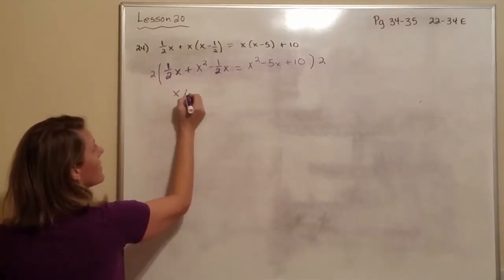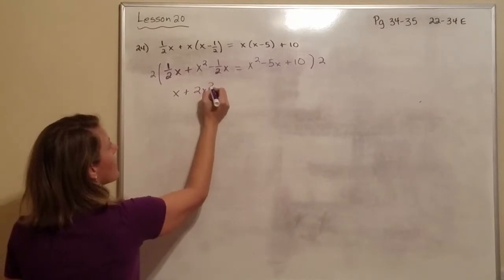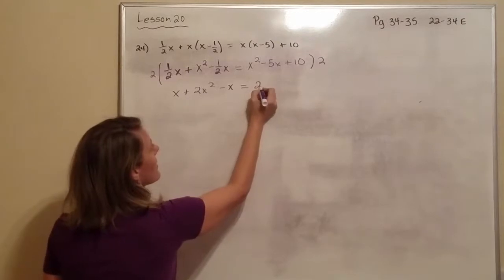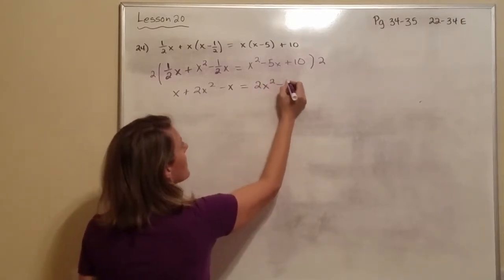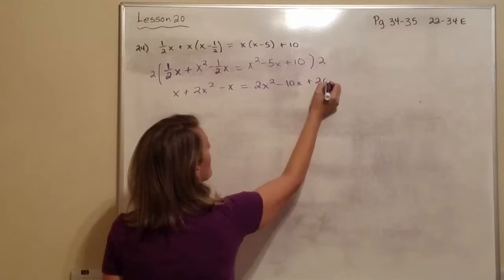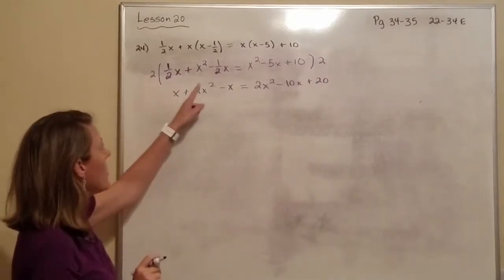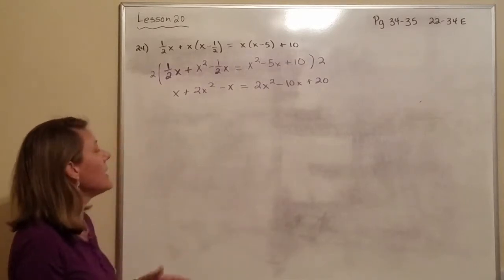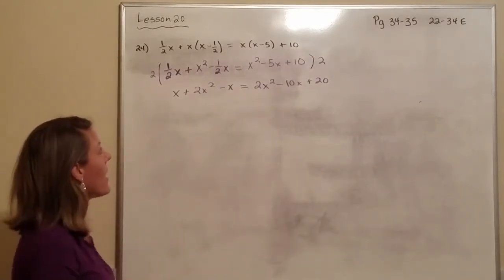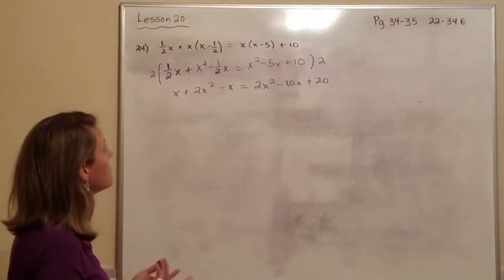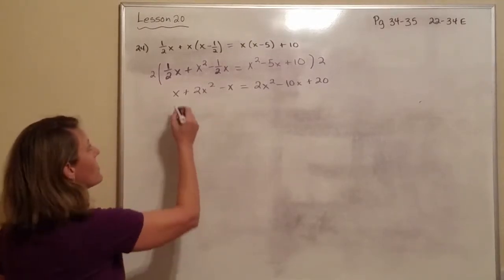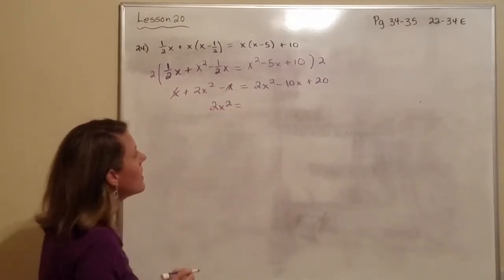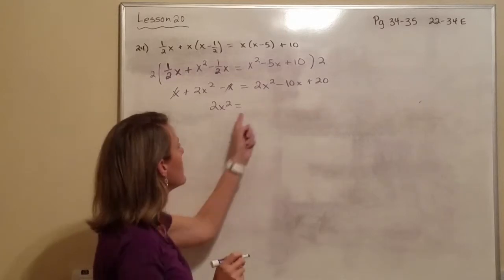This cancels out, this cancels out, alright? So those cancel out and then we multiplied each one by 2. Alright, now let's see if we can simplify anything. Well, an X minus an X, those cancel out because they're on the same side. Anything over here? No.